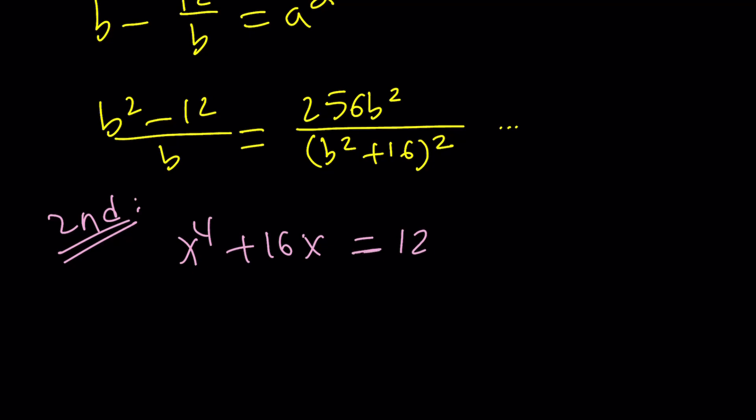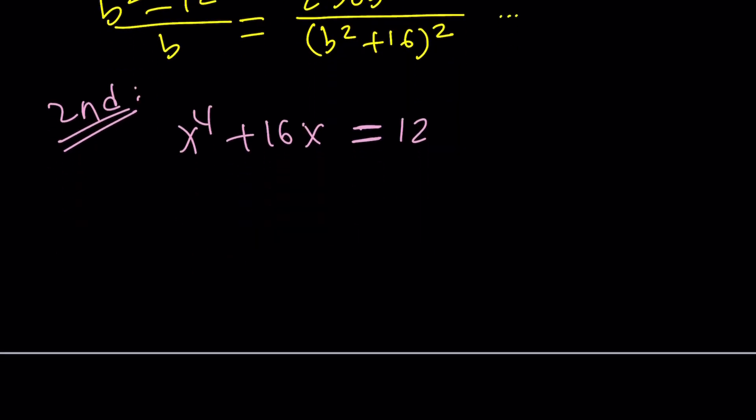So for this one, I'm going to go ahead and isolate the x to the fourth. So write this as negative 16x plus 12. And then we're going to use math of magic. OK, we're going to add something to both sides, two terms to make the left hand side a perfect square. And that's going to be the following. We're going to add 2k x squared plus k squared to this. Basically, what happens on the left hand side is we're getting a perfect square. x squared plus k quantity squared. Makes sense.